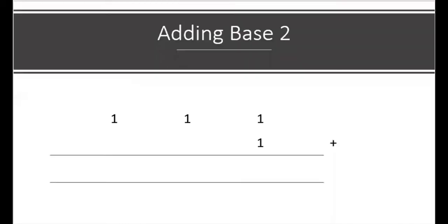We're going to start with adding base 2. As stated, the only digits in base 2 are zero and one, so if your answer does not comprise only of zeros and ones, something is wrong. For example, one plus one — you can't write two, which is our regular base 10 addition. Instead, one plus one is zero carry one. If you can't remember that, you can convert the two you got from base 10 to a base 2 number.